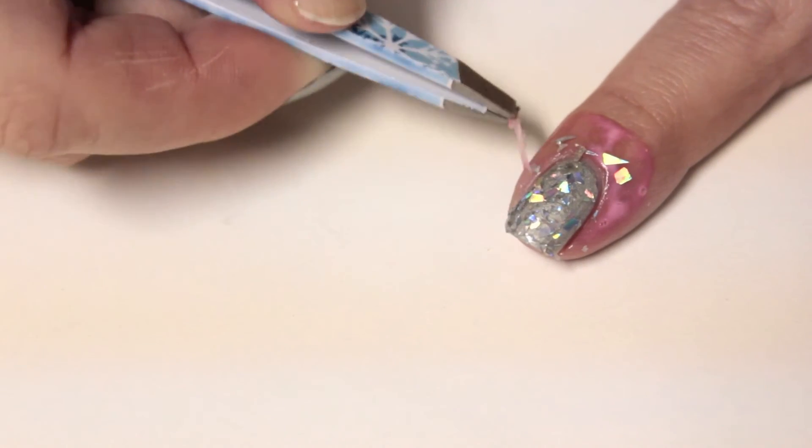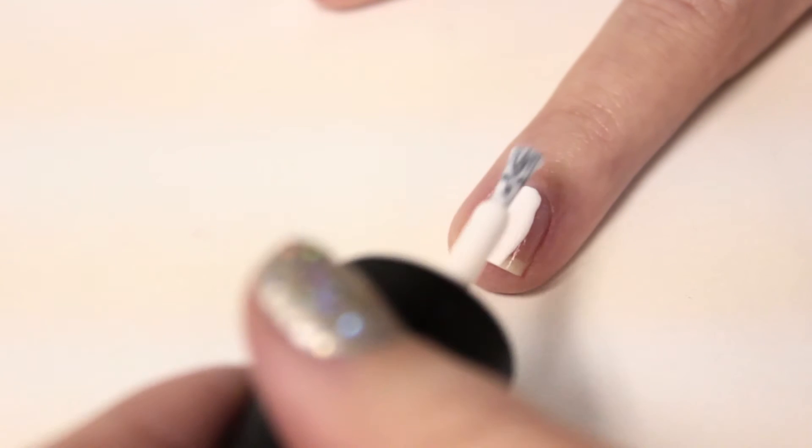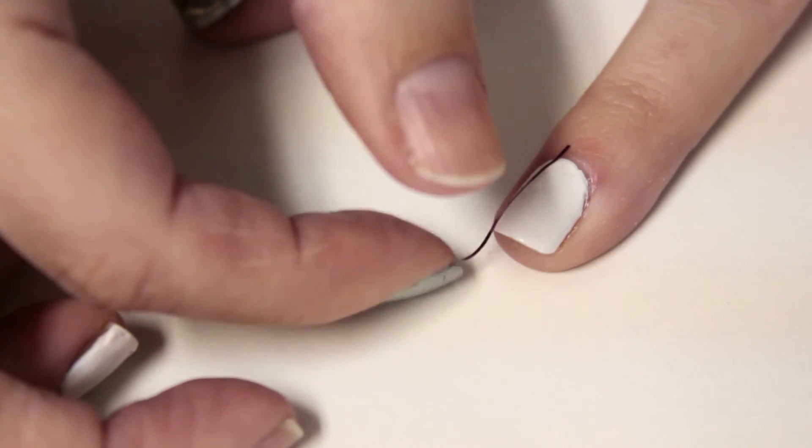And remove the tape. For the accent nail, do a couple coats of a white nail polish, then use tape or liquid tape to make a triangle on your nail.